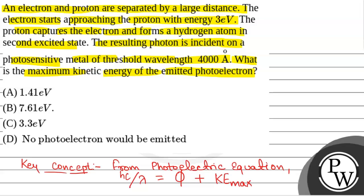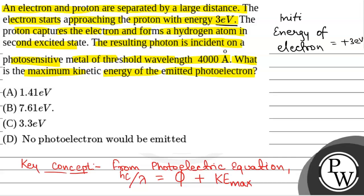Now let's see that we have initially, the energy of the electron is equal to plus 3 electron volt. This is the initial energy.